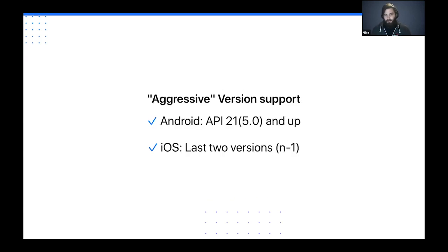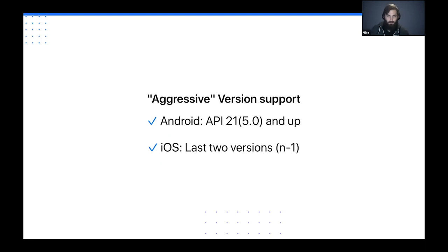Capacitor also has aggressive version support. Cutting off Android 4.4 might sound aggressive, but that still covers about 90% of Android users. For iOS, you can push back further than just N minus one — all the way to iOS 11, though basically no one is on iOS 11. So realistically you get iOS 14, 13, maybe 12 — but check your analytics to see if you need to support that.